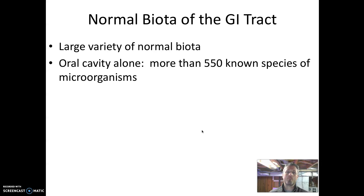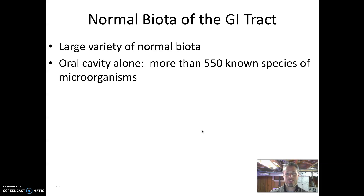That doesn't even tell us how many of each of those microbes are there. The statistic that is quite illustrative of the size of the population is that our mouths contain right now more microbial cells than there has ever been humans living on Earth. We know that the population of humans on Earth today is almost 8 billion, and that doesn't even count all the humans that have come before us. So there are billions and billions of microbial cells in our mouths at all times, represented by at least 550 different species — a huge population that is also very diverse.